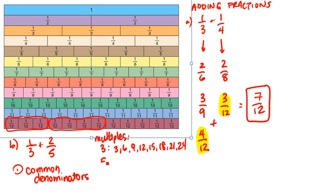Whereas multiples of five are five, ten, fifteen, twenty, twenty-five. And we can stop there since we notice that fifteen is a common multiple.